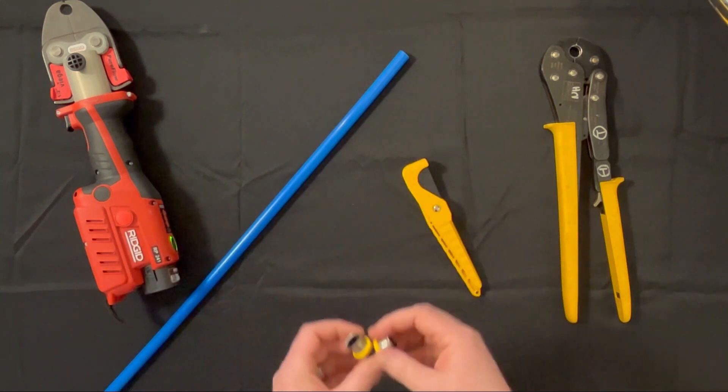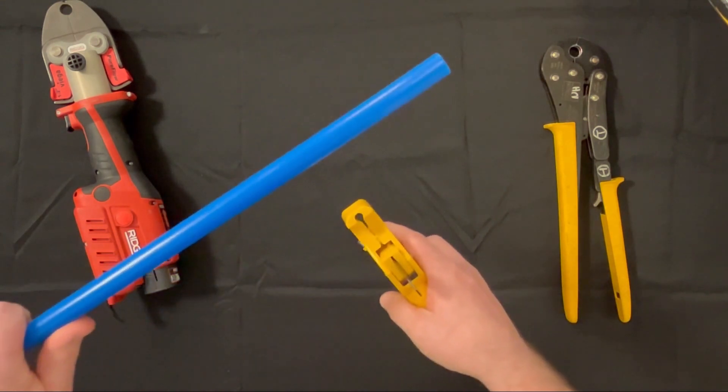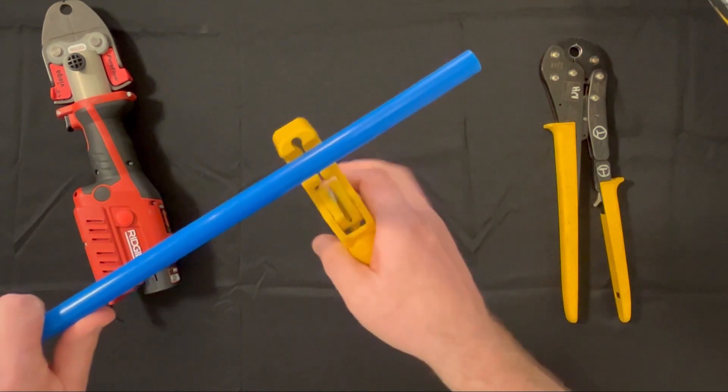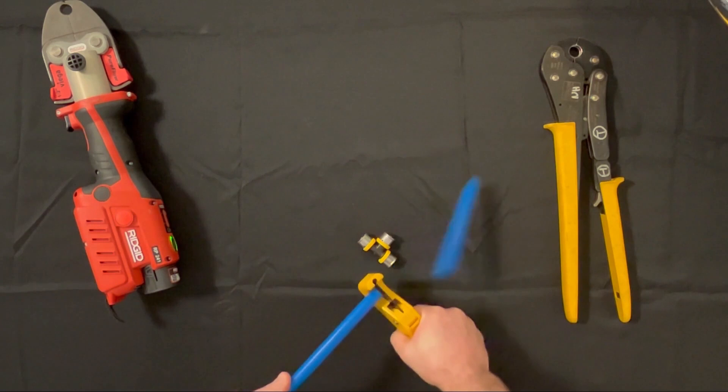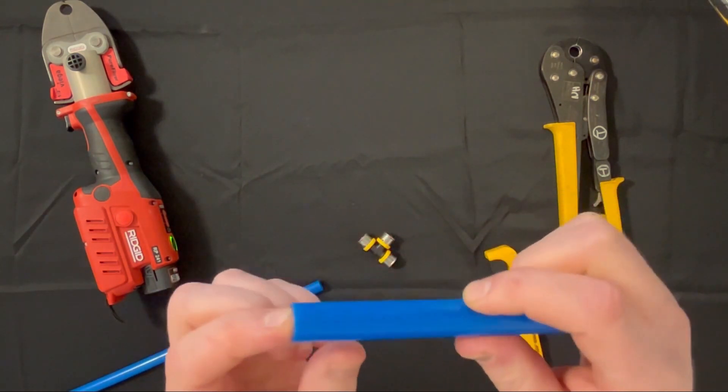When we are working with PEX, the first thing we want to do is cut our PEX or PERT tubing with the appropriate tubing cutter, giving us a square cut to insert into the fitting.